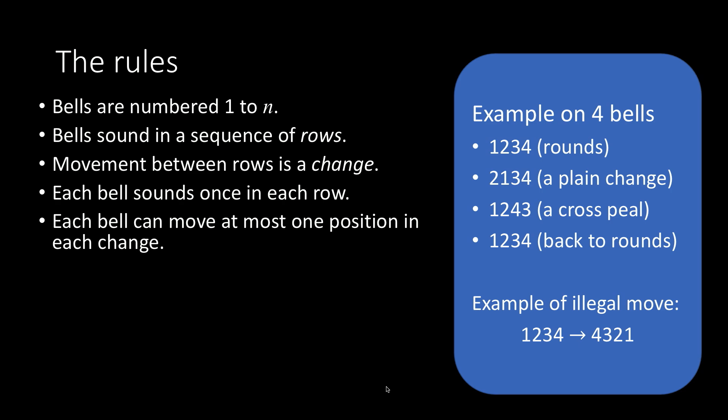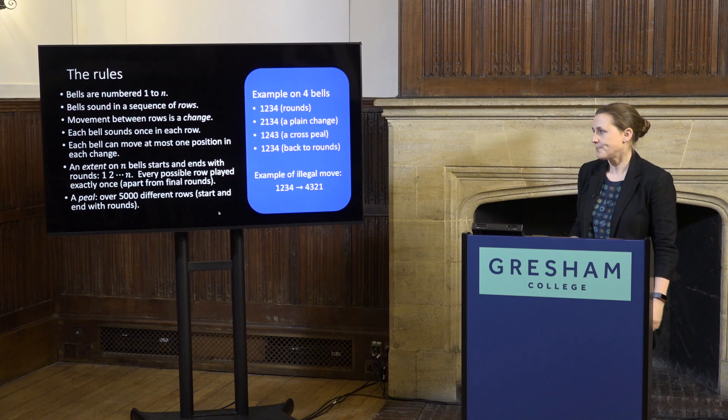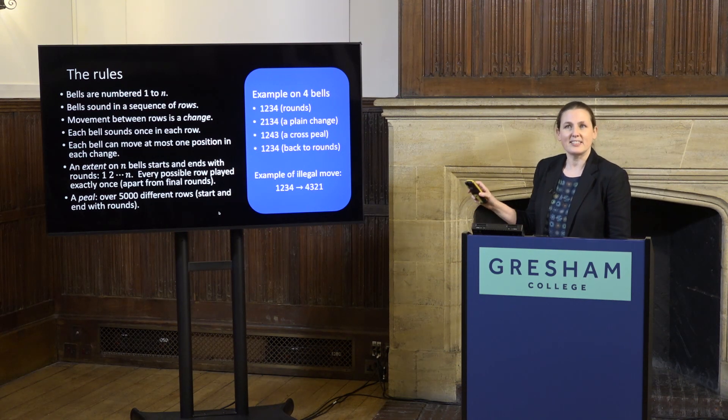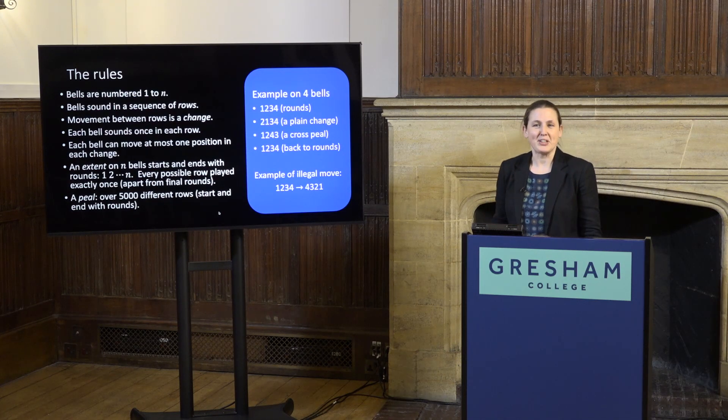With those rules, it's not at all clear that we can play every row exactly once — it's not clear we can get between them all using legal changes, nor that we can do it without repetition. An extent on n bells starts and ends with rounds 1, 2, 3, up to n; every single possible row must be played exactly once — none missed, none repeated. A full extent on n bells will have n factorial rows. A peel is over 5,000 different rows, which comes into play for more than about seven bells.